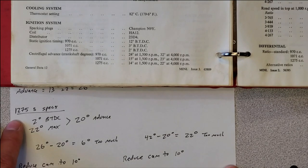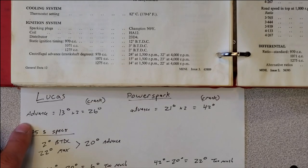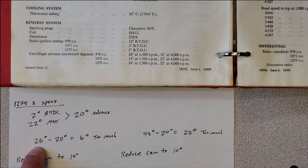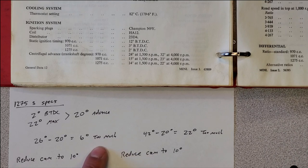Now, looking at the 1275 specs, two degrees before, 22 degrees max. That's 20 degrees of total advance. So if we were to be using this Lucas unit, we need to take 26 degrees that it has, take out the 20, we need to remove six degrees of advance. And the way we do that is by adding material to the cam to reduce its overall movement.